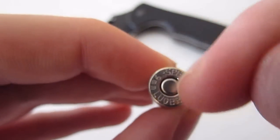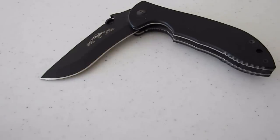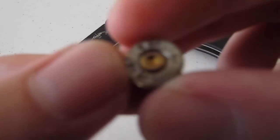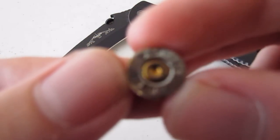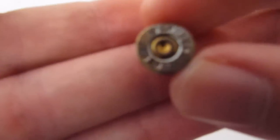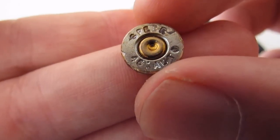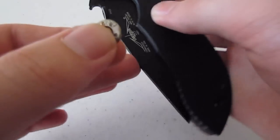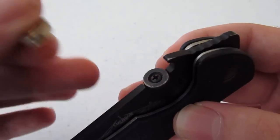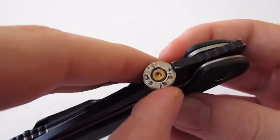So this, all of this bottom part, that's called the head stamp. So what Emerson does, is they take, let's see, get this to focus. This is a .45 head stamp. .45 auto. And what they do, is they drill a hole through it. And you can use this as a replacement thumb disc.